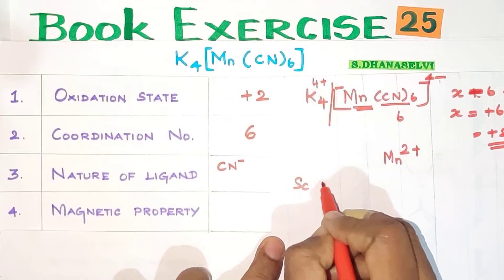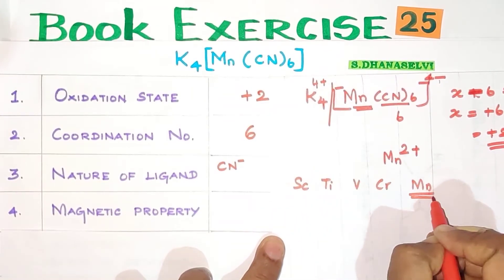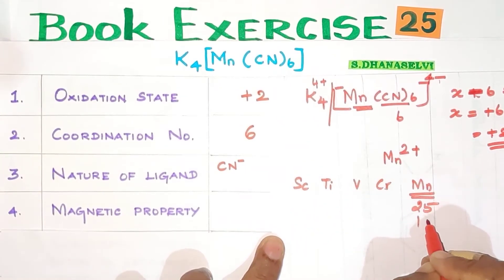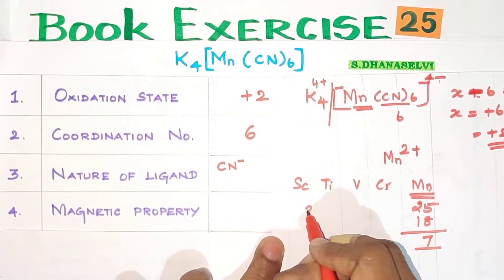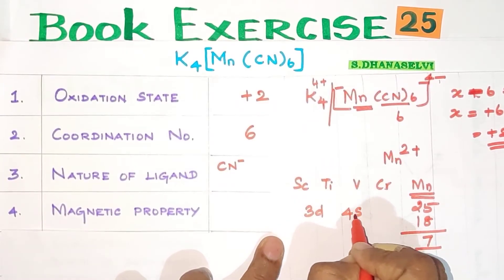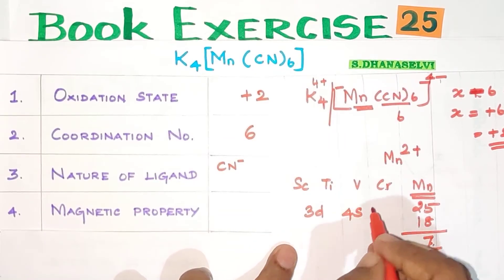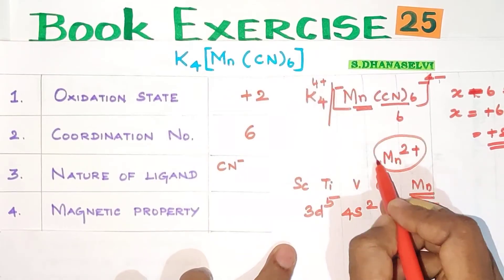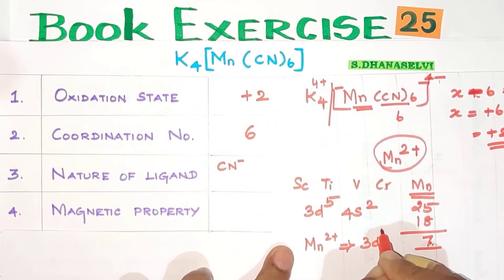The atomic number of manganese is 25. Mn has the electronic configuration 4s2 3d5. When we form Mn2+, we remove 2 electrons, giving the configuration 3d5 for Mn2+. So Mn2+ has 5 electrons in the d-orbitals.